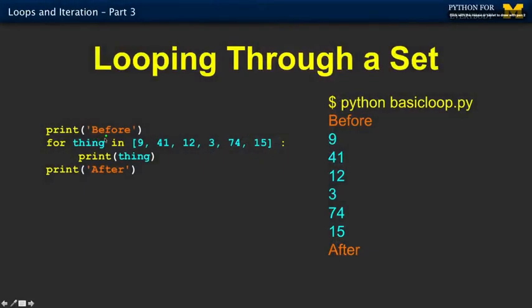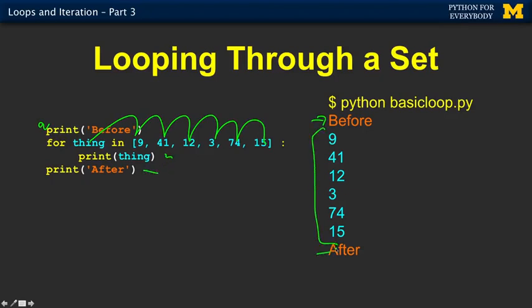Here's the little loop that we're going to use over and over again — and you're going to get tired of these numbers. For an iteration variable in 9, 41, 12, 3, 74, 15 — we print it out before. So we're going to do something before the loop, something during the loop, and something after the loop. Right now I'm just printing everything out, so you can see how the loop works.